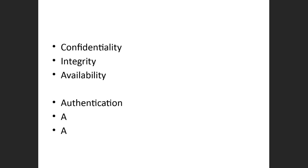The triple-A — not the American Automobile Association — is the other three-legged stool of security. Authentication means I need to know who you are before granting access. Prove that you are who you say you are. Authentication involves entering your account name and password, which only you should know. There are three factors: something you know, something you have, and something you are.